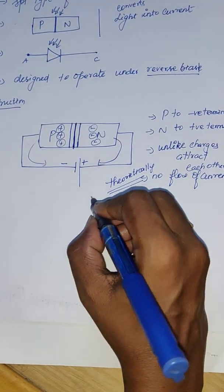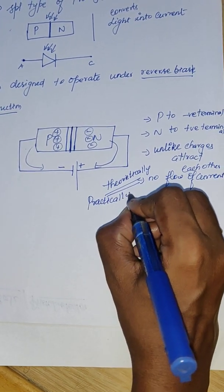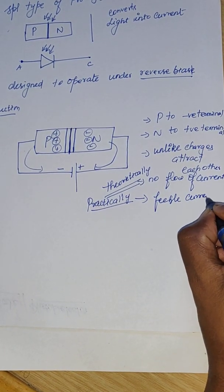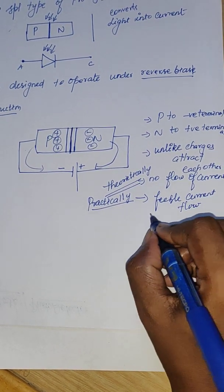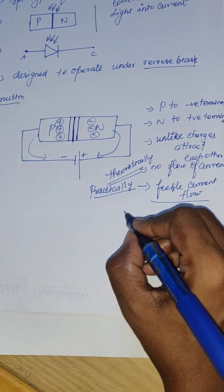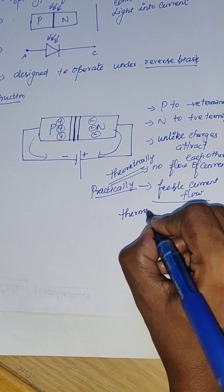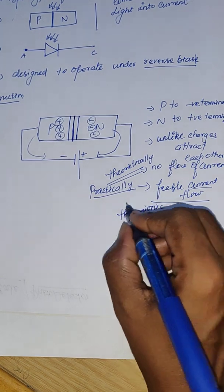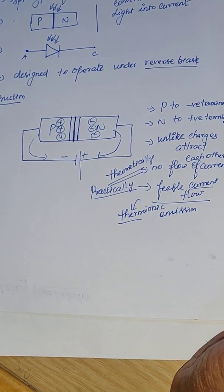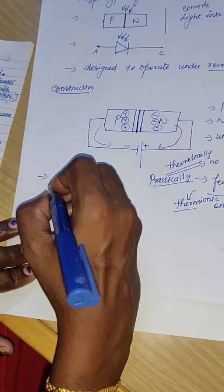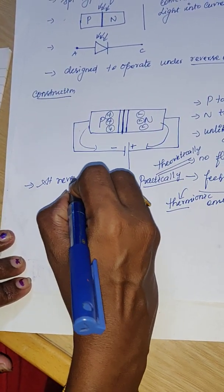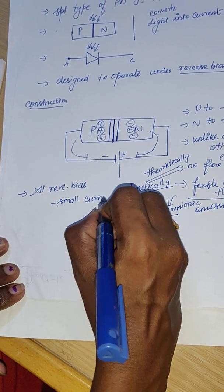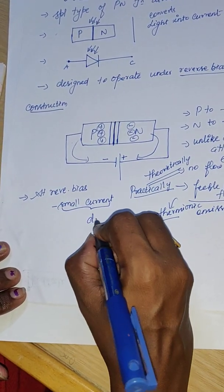Practically, however, there will be a very feeble current flowing through the diode. This is because of an increase in temperature — this is called thermionic emission, meaning current flows due to thermal agitation. So at reverse bias, a very small current flows through the diode, and this small current is called the dark current.